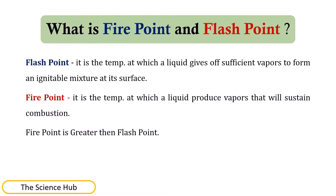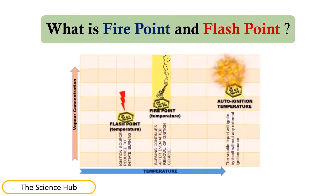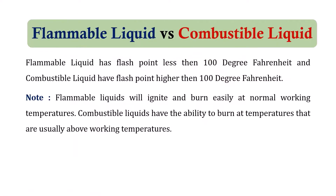Now let's understand flash point and fire point. Flash point is the temperature at which a liquid gives off sufficient vapors to form an ignitable mixture at its surface. Fire point is the temperature at which a liquid produces vapor that will sustain combustion. Regarding flammable versus combustible liquids: a flammable liquid has a flash point less than 100°F, and a combustible liquid has a flash point higher than 100°F.